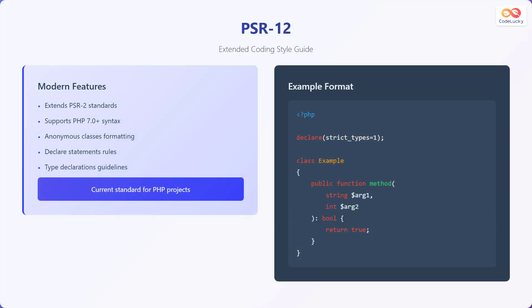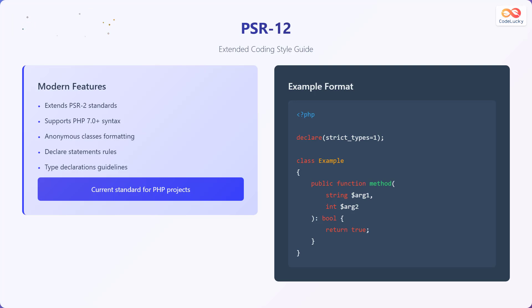Let's explore PSR12, the Extended Coding Style Guide. This standard extends PSR2 and supports PHP 7.0+ syntax. It also provides guidelines for anonymous class formatting, declare statement rules, and type declarations. It serves as the current standard for PHP projects, ensuring code consistency and readability. An example of its formatting conventions includes declare statements, class definitions, and method signatures.